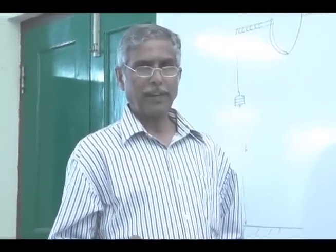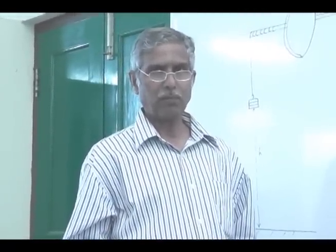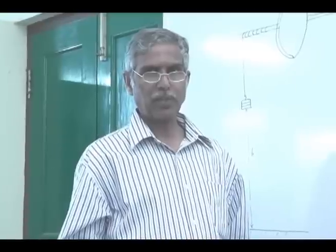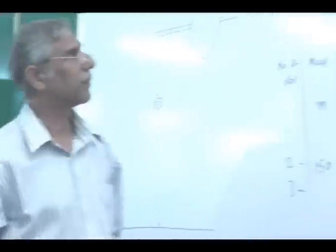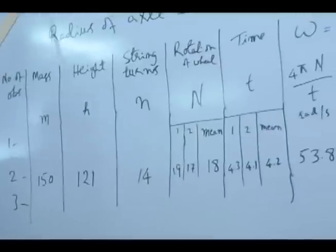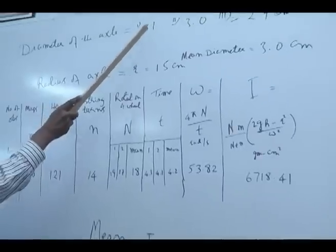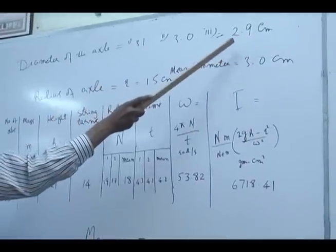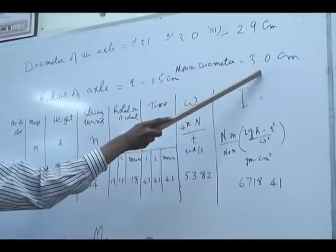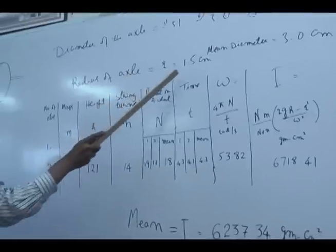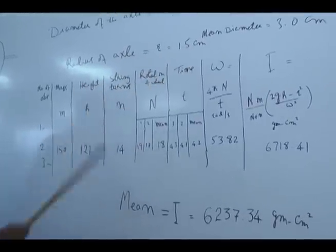Now we will enter all the readings what we observed actually from the experiment. So we measured diameter three times and we took its every value, mean diameter, and then its radius of the axle 1.5 cm.